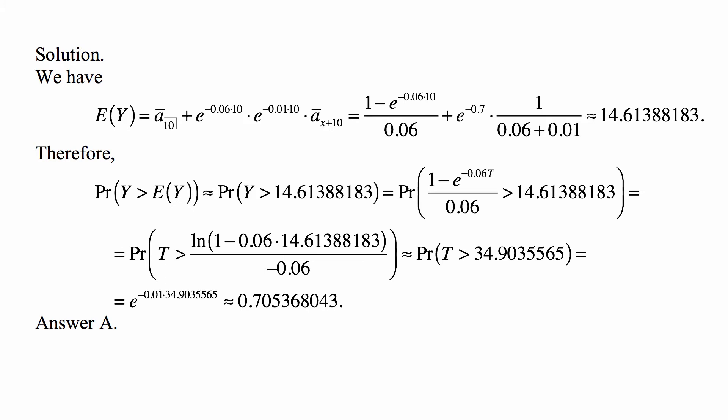With consideration for both force of interest and force of mortality, the deferral is accounted for by pure endowment, the present value factor, which is e^(-0.06 × 10) times e^(-0.01 × 10) times a-bar x+10.